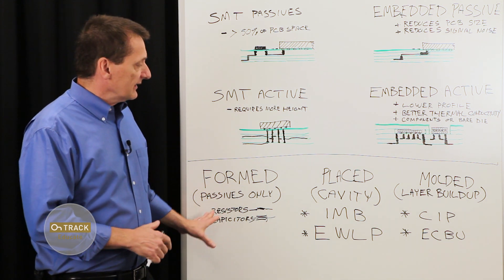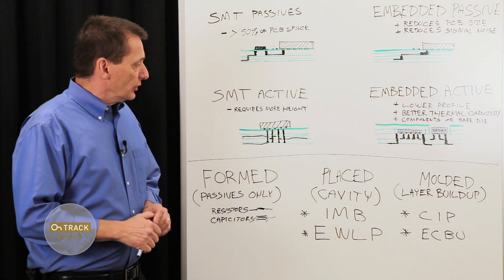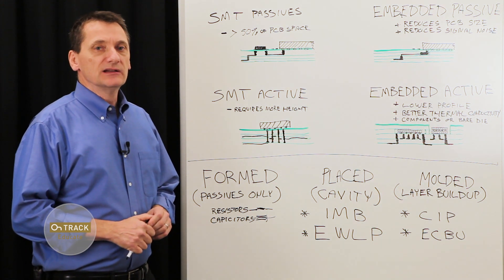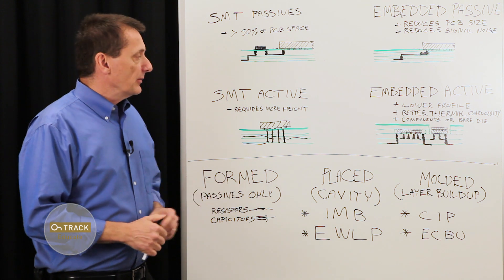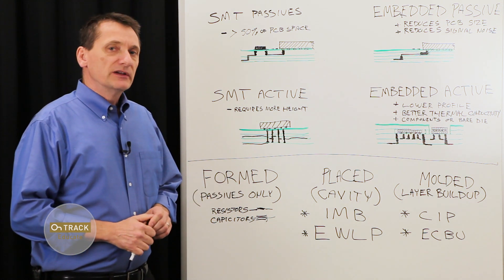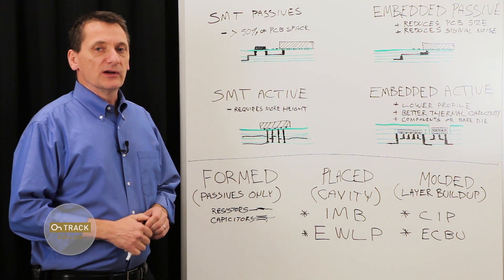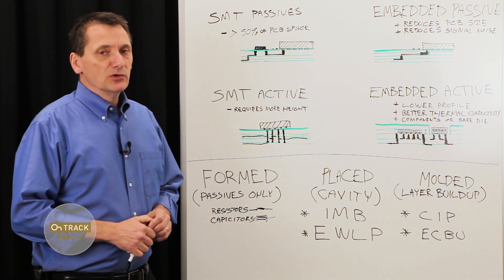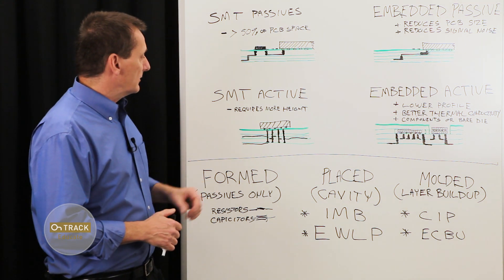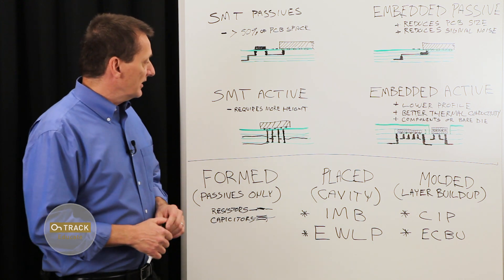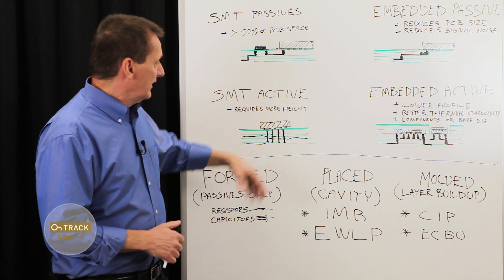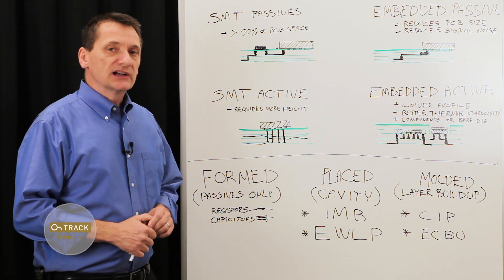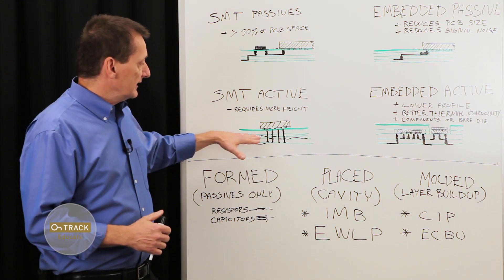Now, to get this information to the fabricator, you're going to discover that the typical Gerber format is not going to be applicable. Gerber just provides information about copper imaging. You'll definitely want to investigate the newer formats such as Gerber X2, IPC 2581, or ODB++. These newer formats take into account embedded components and can convey this information of component placement, component layer, component orientation to the fabricator because it's the fabricator that will actually be placing the parts within the PCB.